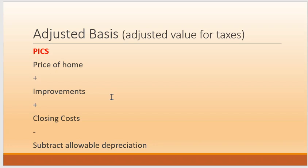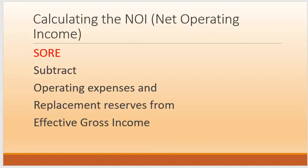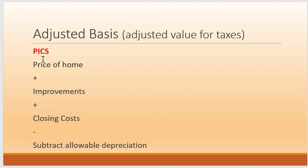The adjusted basis is the updated or adjusted value of the home. The reason I made it PICS and not PICA — which would have an A at the end — is so I don't forget what to subtract, which is the allowable depreciation from the cost of home, improvements, and closing costs. So those are two easy ways to remember — just write those acronyms on your scratch piece of paper.